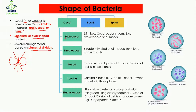The first arrangement is diplococcus. 'Di' means two, so the cocci occur in pairs. When two cocci are joined together they are known as diplococcus. The example of diplococcus is Diplococcus pneumoniae, which causes pneumonia in humans. The plane of division is one.